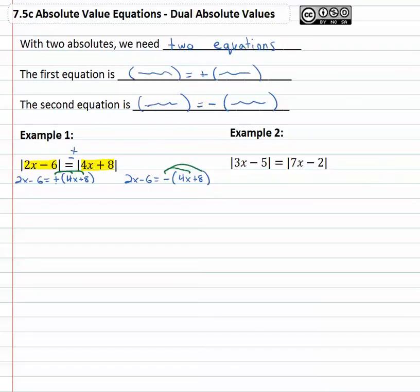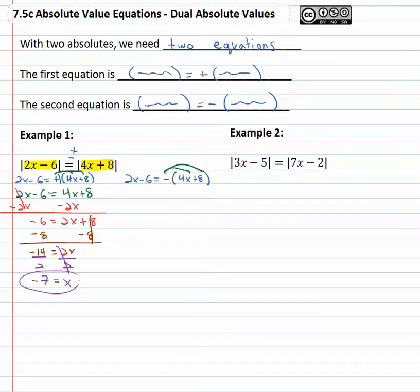So for the first problem distributing a positive one doesn't make much difference. 2x minus 6 equals positive 4x and positive 8 and then we can keep solving from there, moving the variable to one side by subtracting 2x from both, negative 6 equals 2x plus 8, subtract 8 from both sides, negative 14 equals 2x. Divide by two, all of this should be very familiar to us by this point, gives us negative 7 for our first solution.